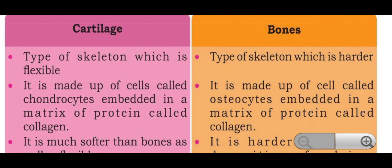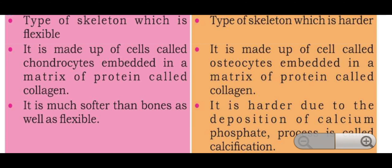The cartilage is a type of skeleton which is flexible. It is made up of cells called chondrocytes embedded in a matrix of protein called collagen. It is much softer than bones as well as flexible.